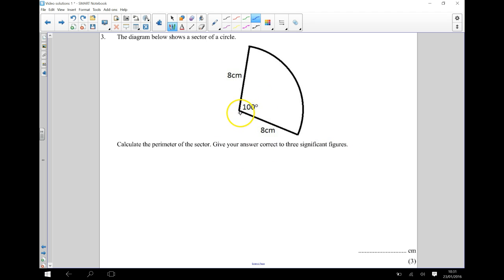Now remember the perimeter is the distance all the way around this sector, so it's this distance here. Now we know two of the lengths here, we know 8 and 8.